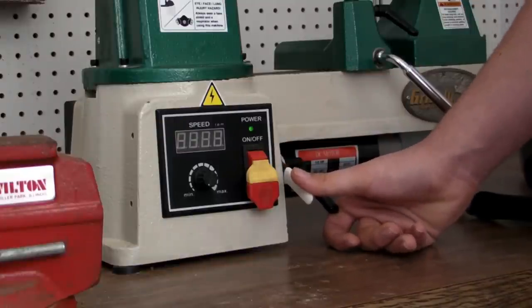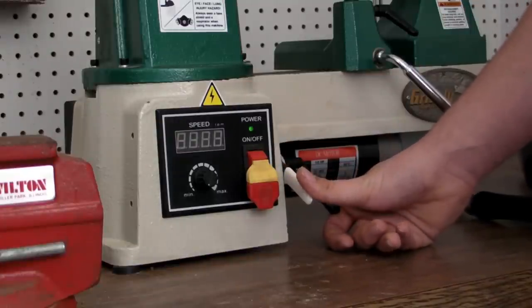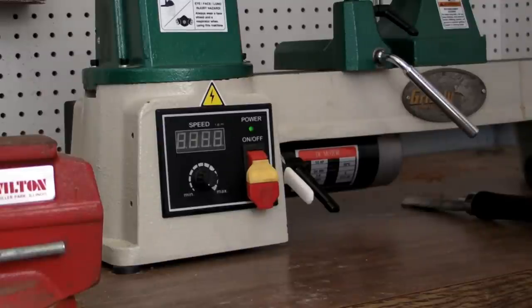You always make sure that this knob is tight when the lathe is running. If it's not, your belt can break, and your motor can break. Actually, I don't think it will damage your piece of wood, but belts are expensive and hard to come by, especially for grizzly lathes.